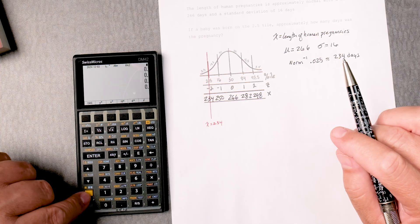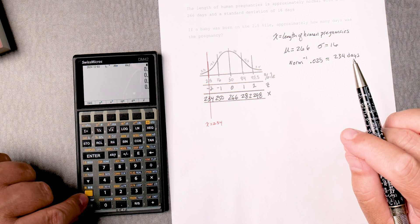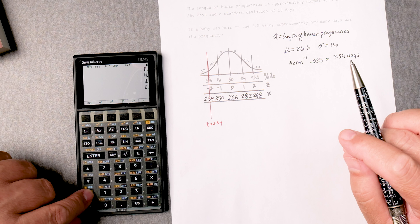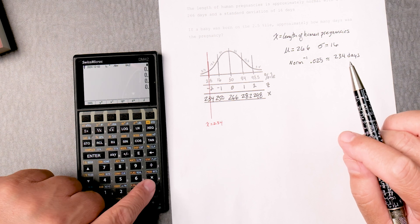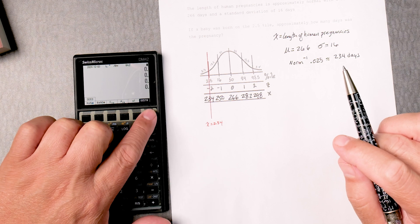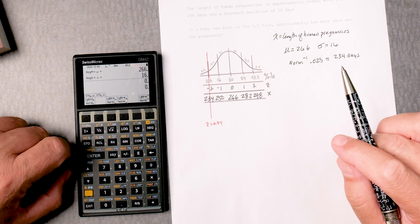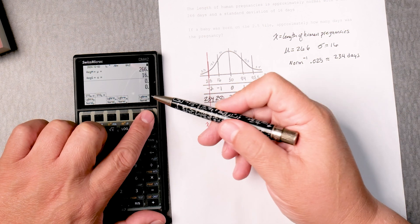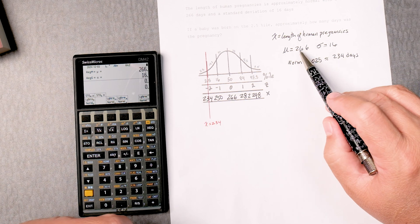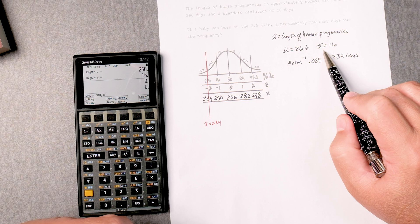We're going to press the yellow button once. Let's click on probability, then distribution, then normal. You can see here on the right there's an inverse normal. We're going to put 266 and 16 in the calculator for the mean and standard deviation.